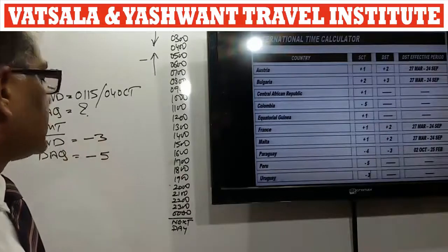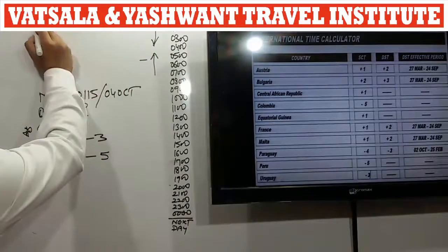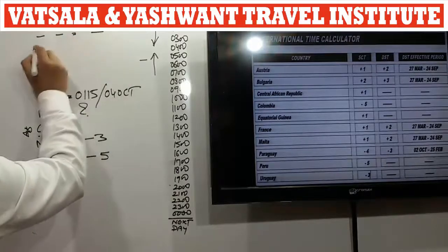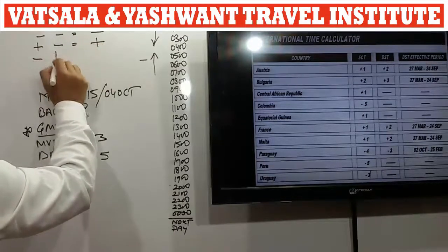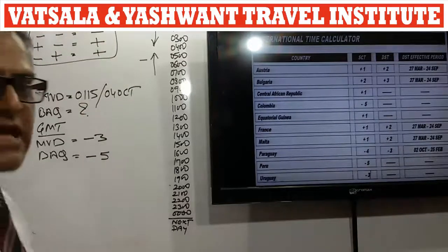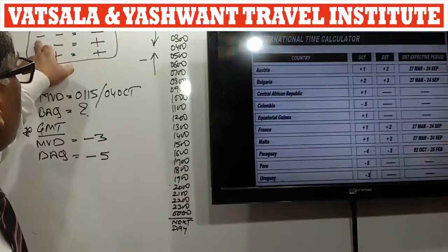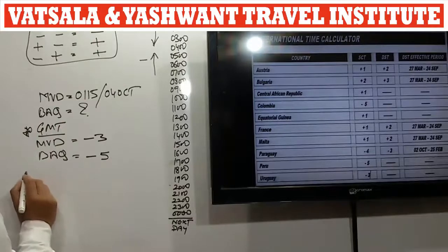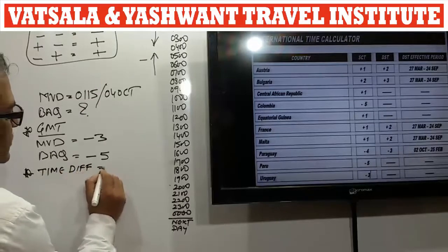Both cities have a minus sign. The formula for time difference when both cities have minus signs says: minus minus → always minus them. So the time difference will be minus 3 minus minus 5 = 2 hours.